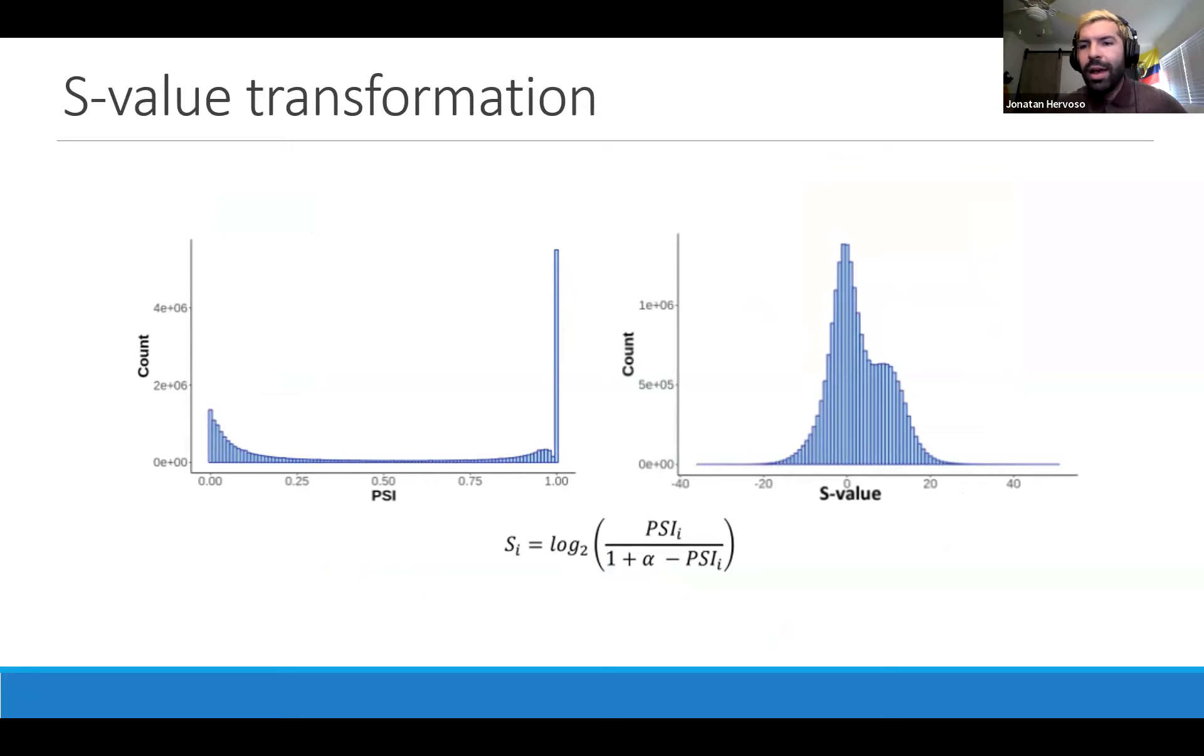For the assumptions that we need for our models moving forward, this puts a problem because there's a linear assumption. The PSI distribution is not normal at all. What we came up with, borrowing from the methylation field, is a transformation called the S value transformation, or splicing value transformation, which is basically a log 2 transformation of the PSI with an alpha correction to account for particular values at the boundaries like 0s and 1s. We can transform our PSI values into S values, which are much more normally distributed and fit the assumptions for building our predictive models.